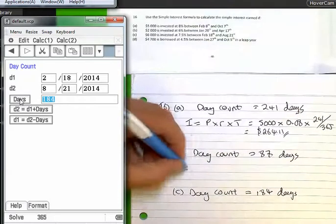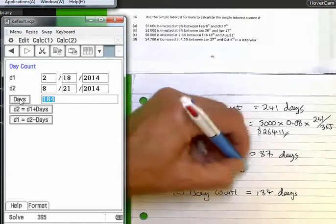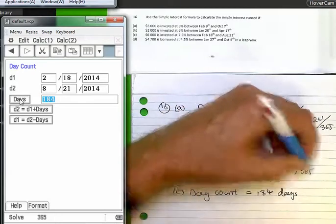So the second one becomes 2000 times 0.06 times 87 over 365.